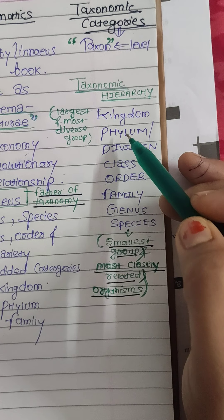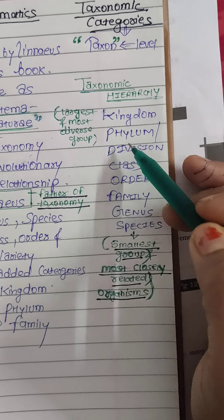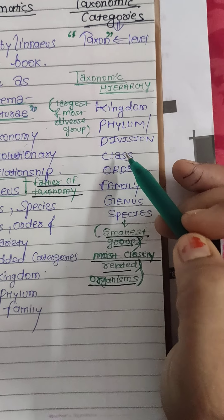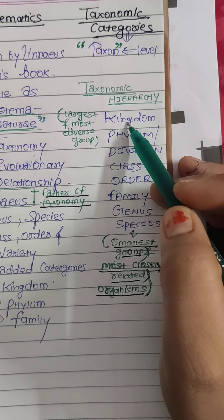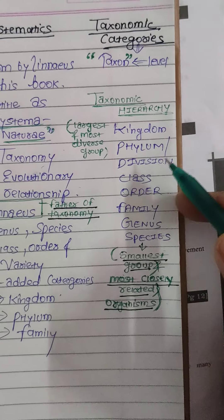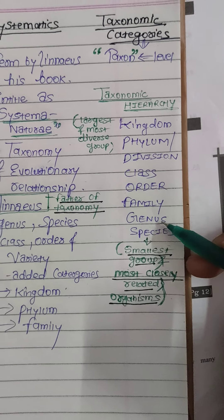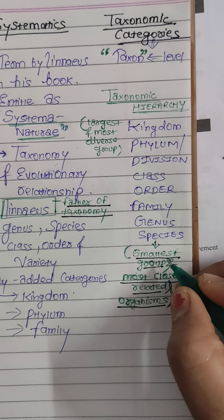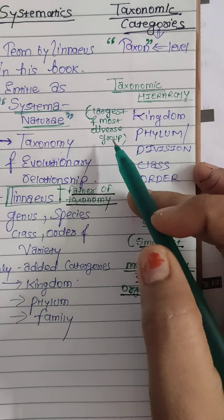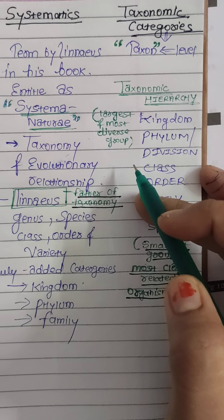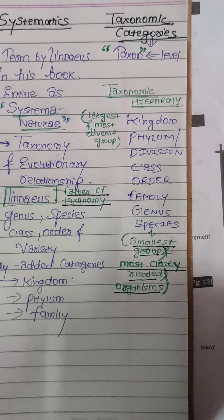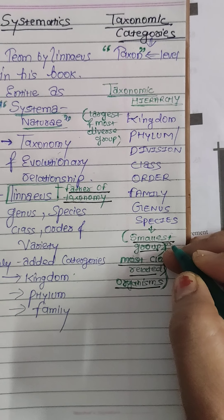In the taxonomic hierarchy, all categories are arranged as follows: kingdom contains phylum — called phylum in animals and division in plants — phylum contains class, class contains order, order contains family, family contains genus, and genus contains species. Species is the smallest group, and kingdom is the largest and most diverse group.